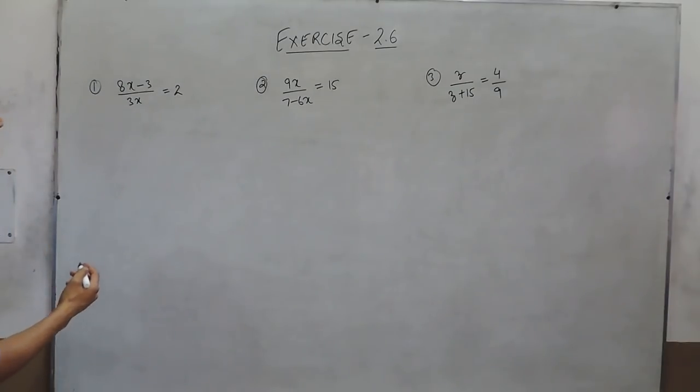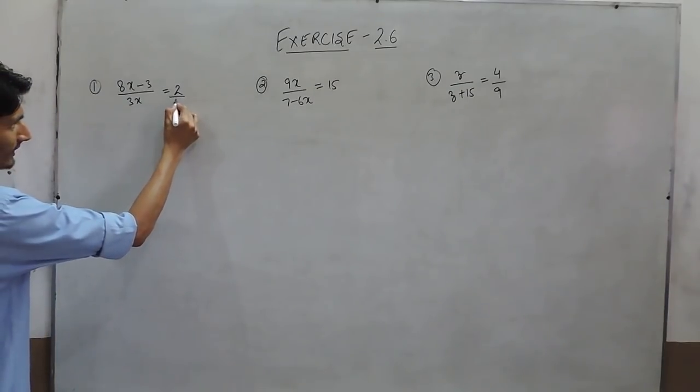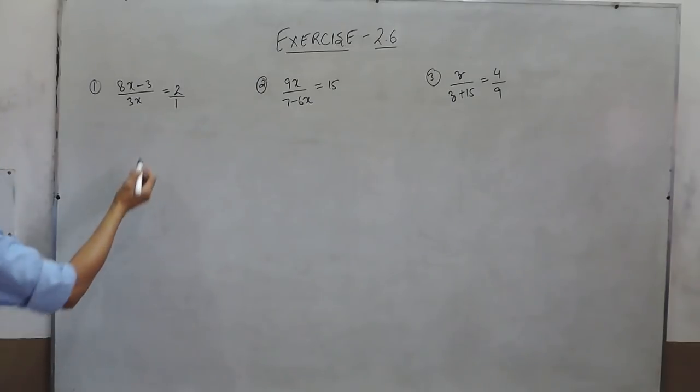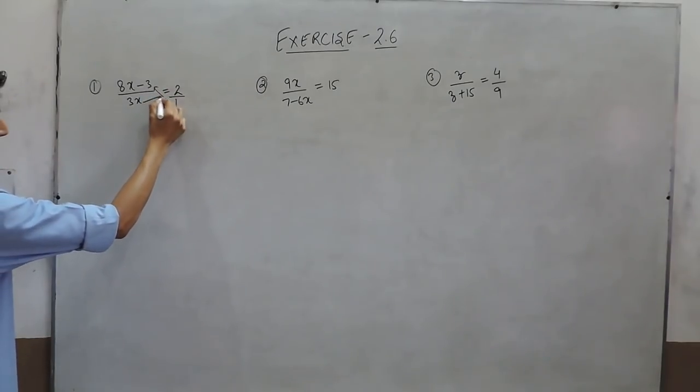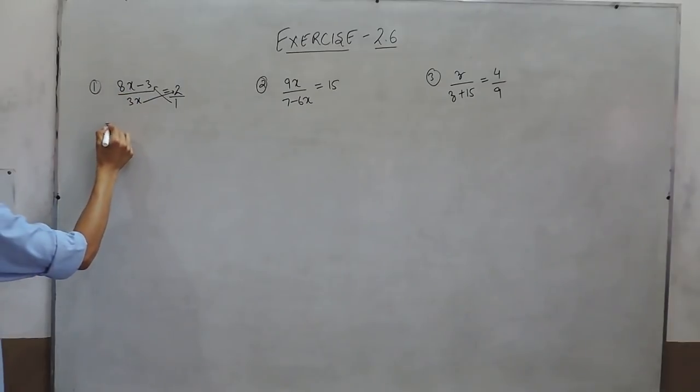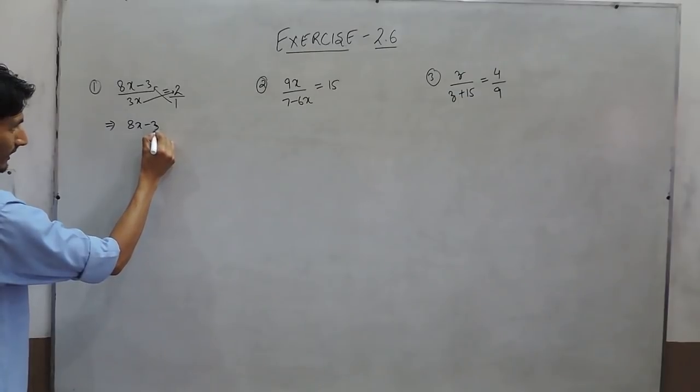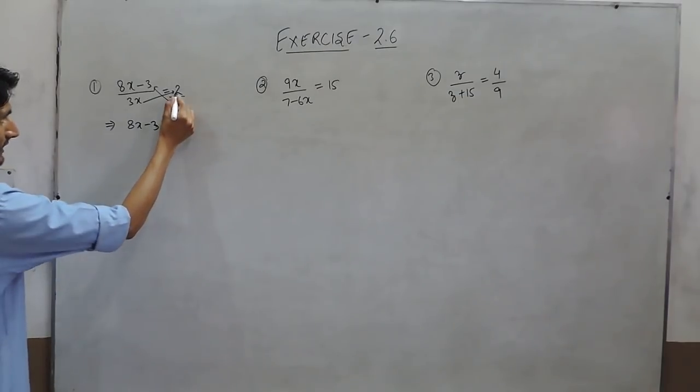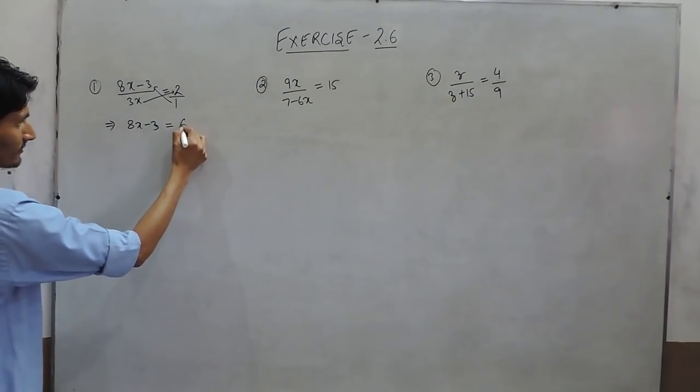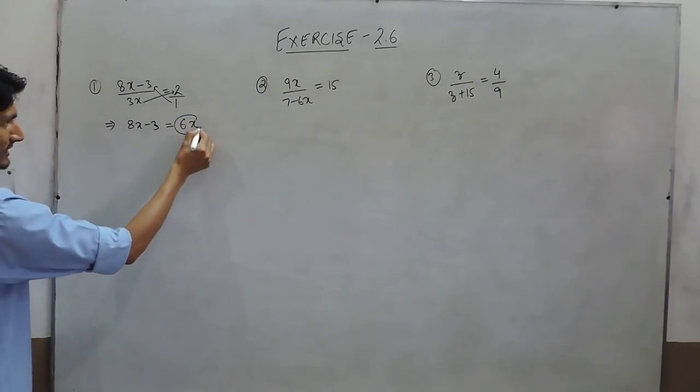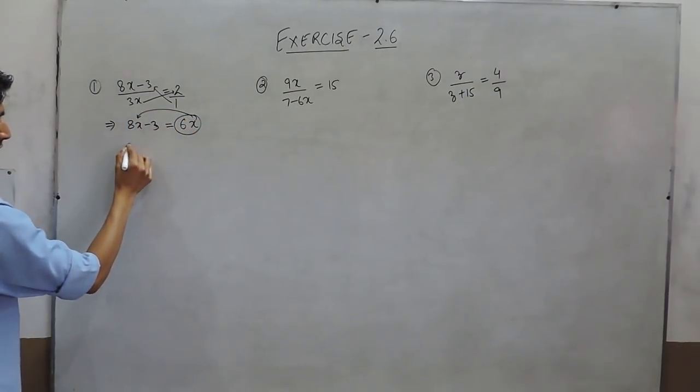To solve question number first, we can assume here as 1. So simply we can cross multiply it. When this is multiplied by 1, it will remain as it is. And when this is multiplied by 2, it will give 6x.